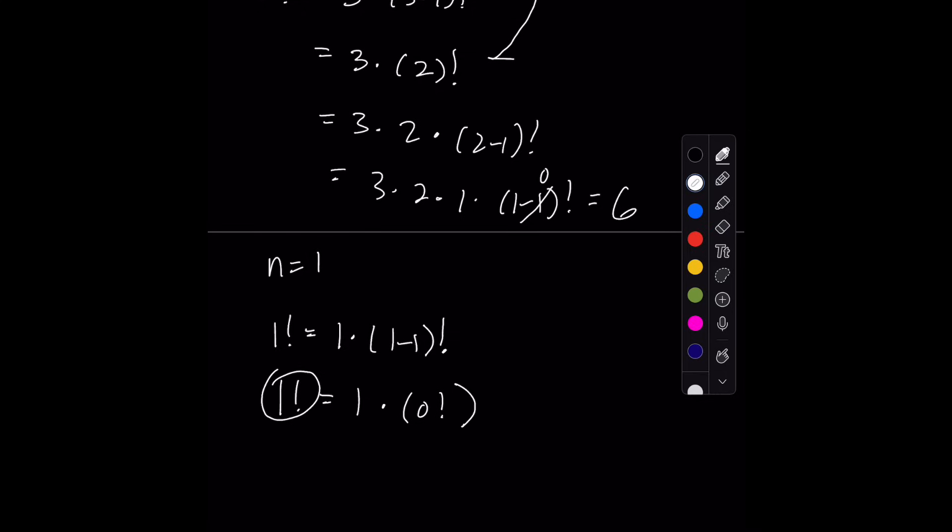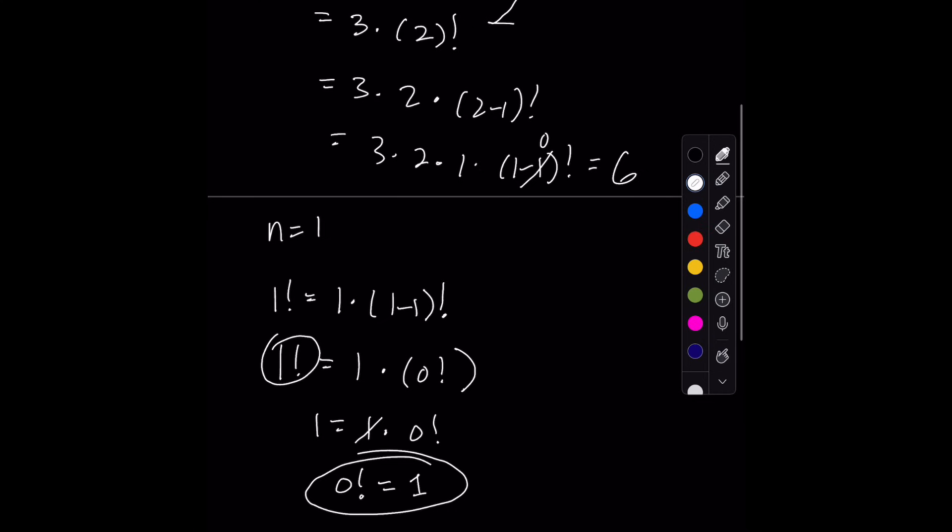And we already know 1 factorial is 1, so we get 1 equals 1 times 0 factorial. If we divide by 1, we get the expression 0 factorial equals 1. It must equal 1. And that is how you can derive 0 factorial equals 1.